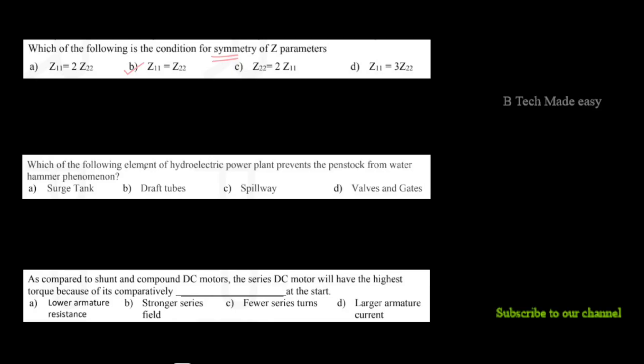Next question: which of the following elements of a hydroelectric power plant prevents the penstock from the water hammer phenomenon? The answer is the surge tank — it prevents water hammering in the penstock.